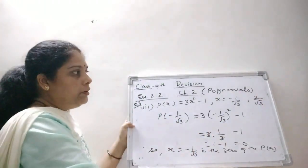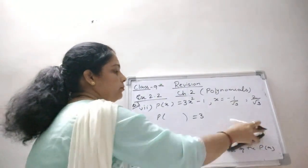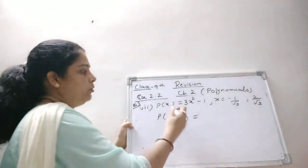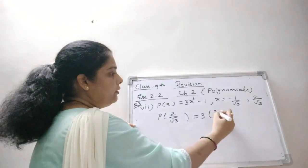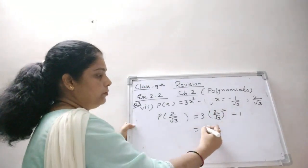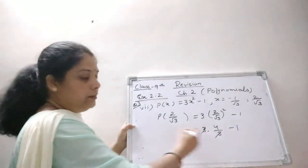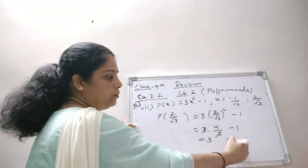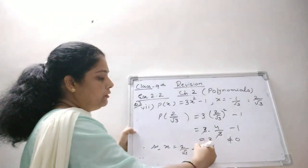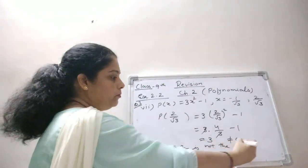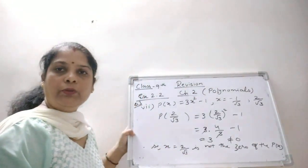Now we check the second value: x = 2/√3. We put P(2/√3) = 3 × (2/√3)² minus 1. That gives 3 × (4/3) minus 1. The 3s cancel, leaving 4 minus 1 = 3. Since the answer is not equal to 0, x = 2/√3 is not the zero of the given polynomial P(x).